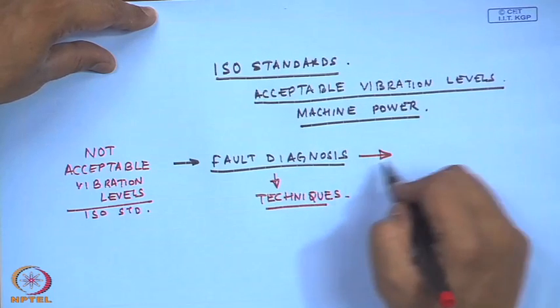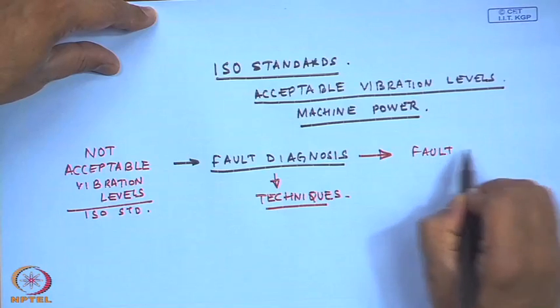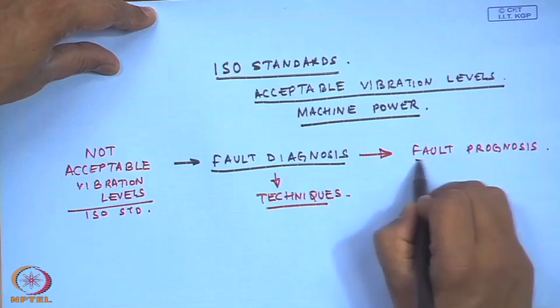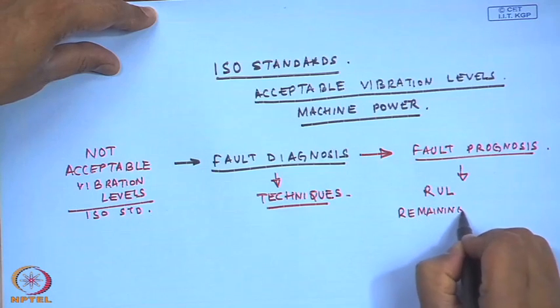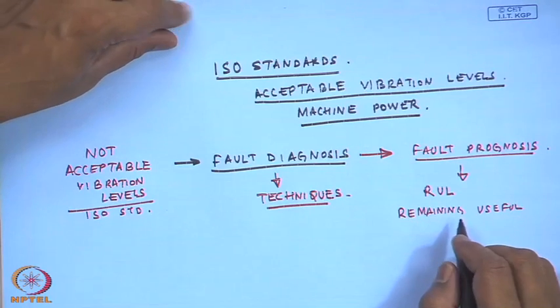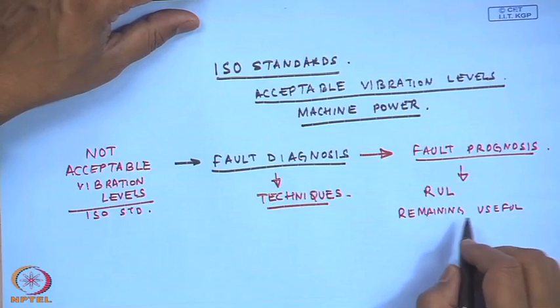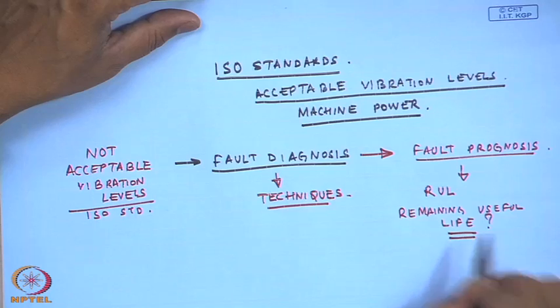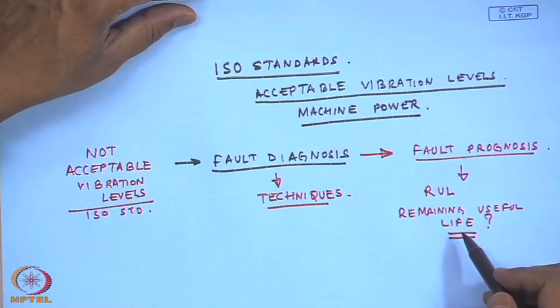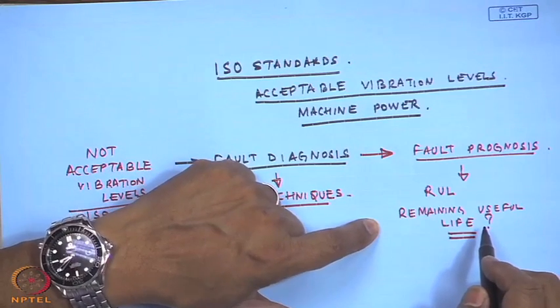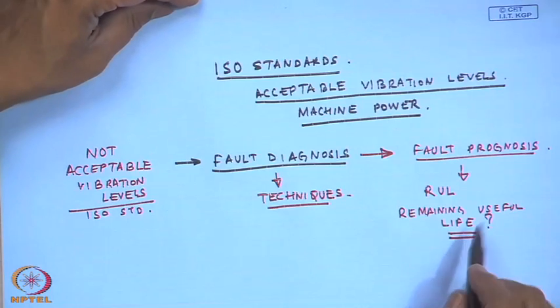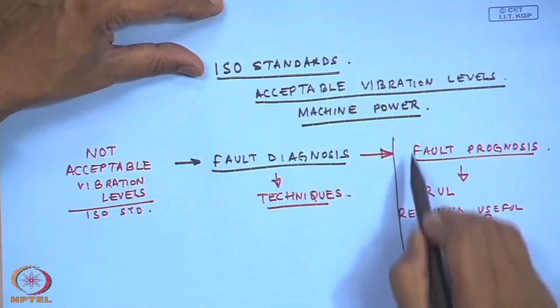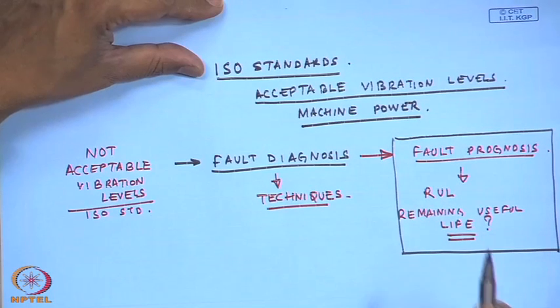Once we have an unacceptable vibration level, fault diagnosis techniques are applied — as covered throughout the forty lectures. Beyond this course's scope is fault prognosis through mathematical models to find the RUL — remaining useful life. One application of remaining cutting tool life in a machining operation was mentioned in an earlier lecture. Fault prognosis tells us whether a machine will survive, how long it will last, or whether it needs immediate replacement. This may be covered in a second-level course on machinery fault diagnosis.